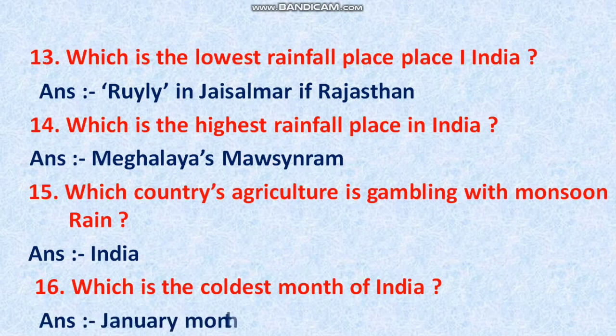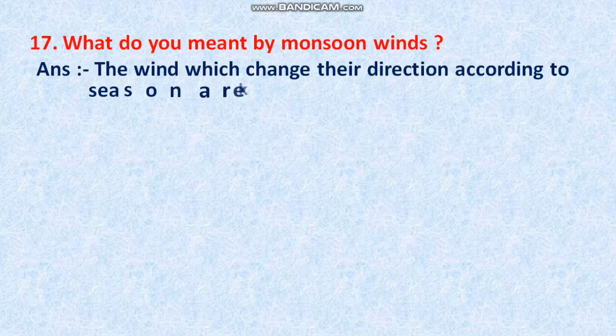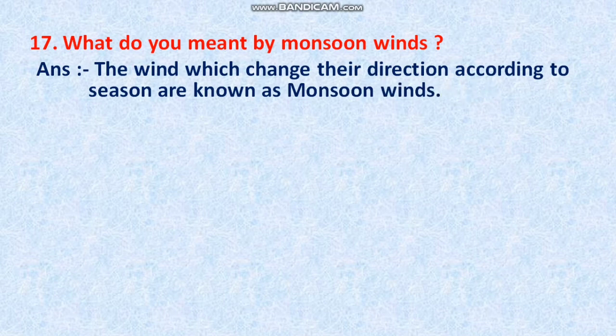Question 16: Which is the coldest month in India? The answer is January. January is considered the coldest month in India. Question 17: What do you mean by monsoon winds? The winds which change their direction according to the season are known as monsoon winds.